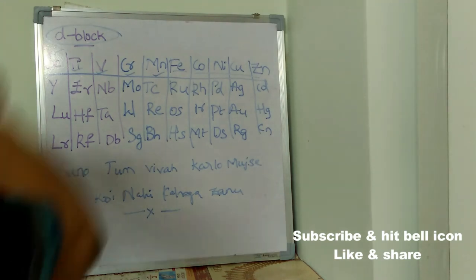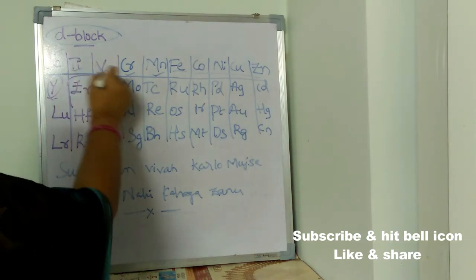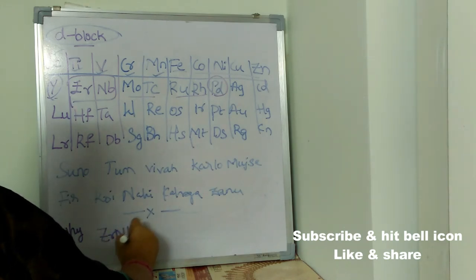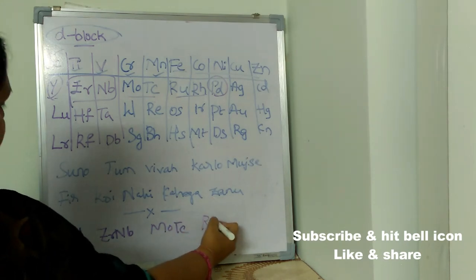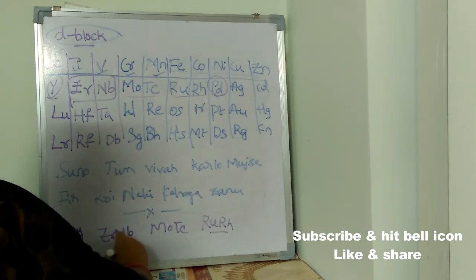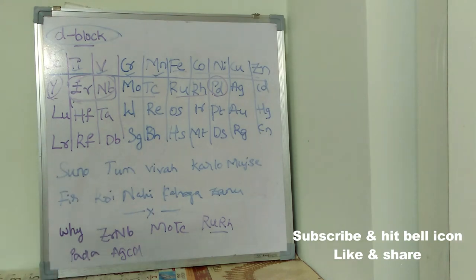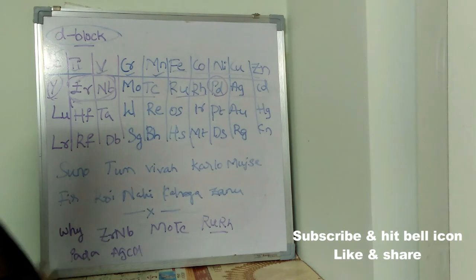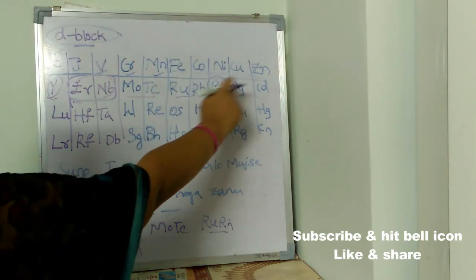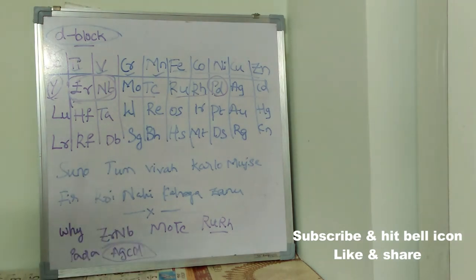For D block line 2, remember: 'Ruha pada AGCD' — like, why did Jarab study AGCD instead of ABCD? 'Jarab moj se ruha pada AGCD' — why did Jarab study AGCD? If you remember this sentence you can recall the elements of this line.